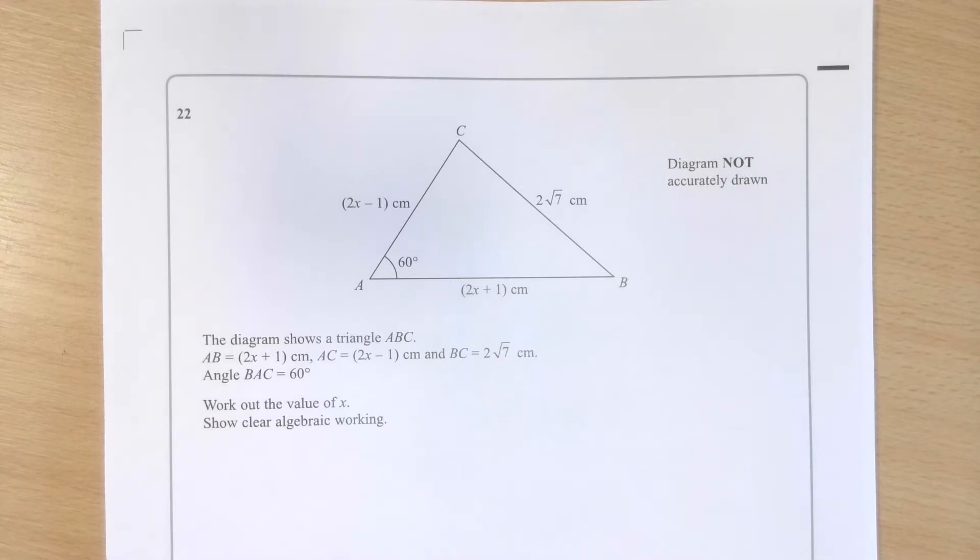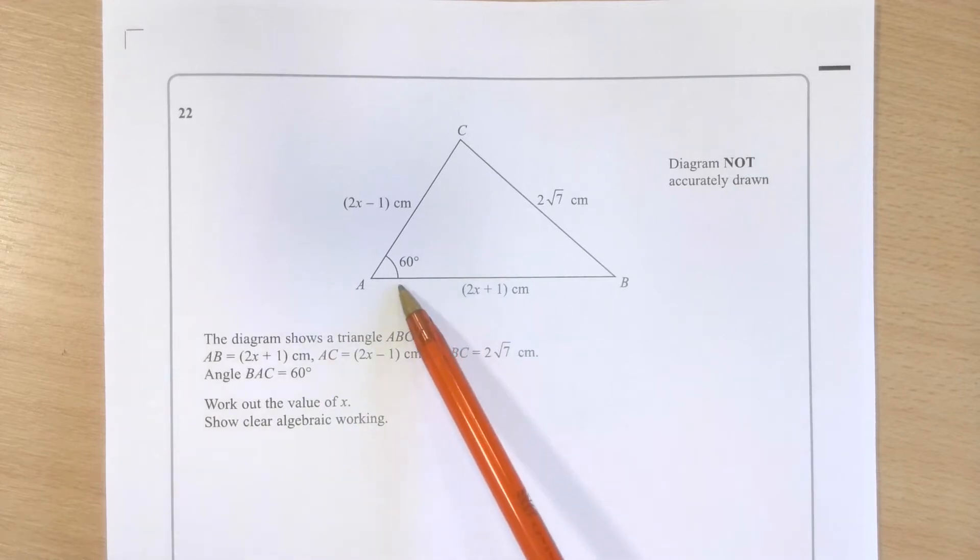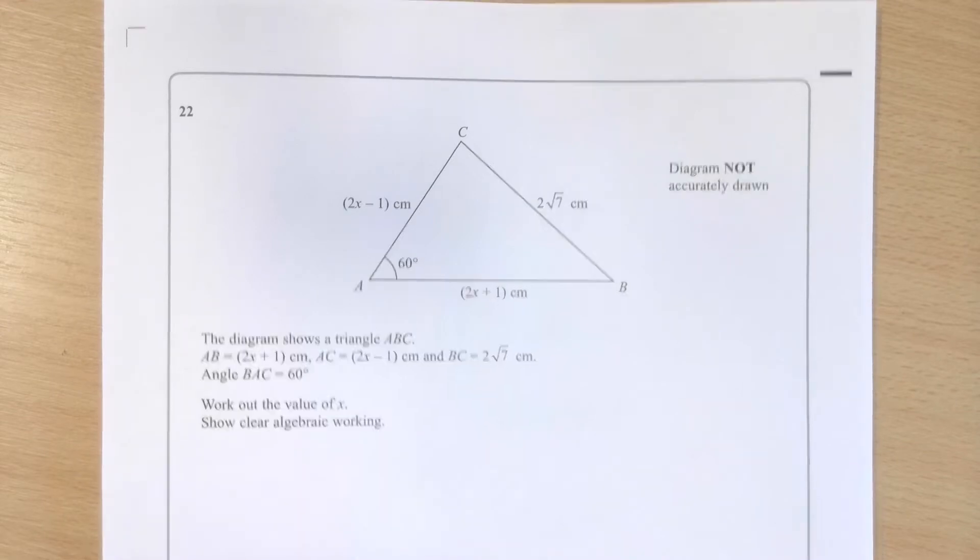It's going to be advanced trig involving a non-right-angled triangle. The question is, is it the sine rule? Is it the cosine rule? Well, we've got an angle here, we have all three side lengths, no other angles. That means it's going to be the cosine rule.